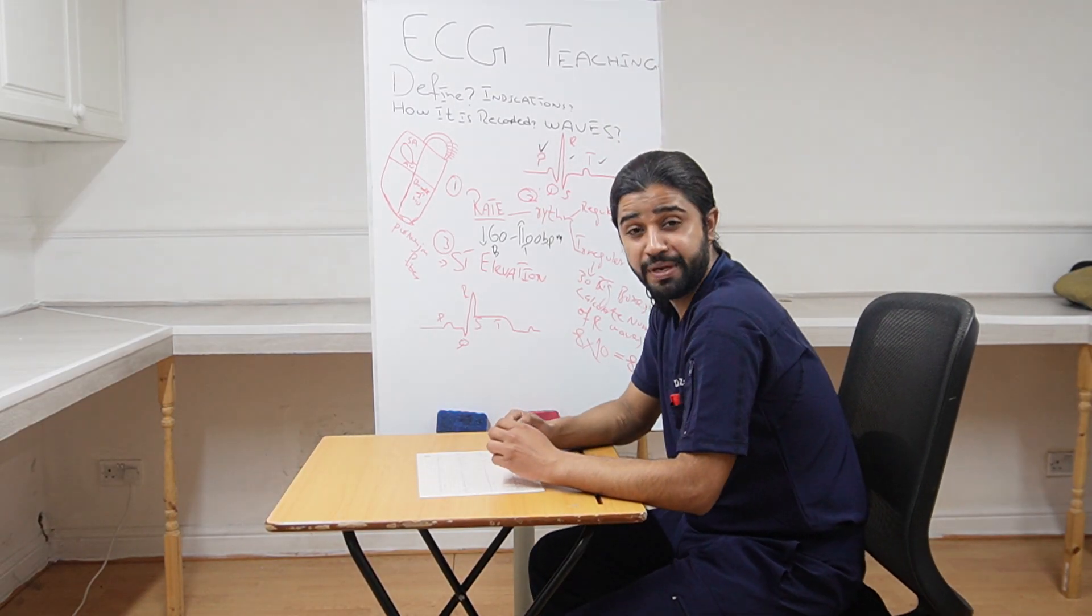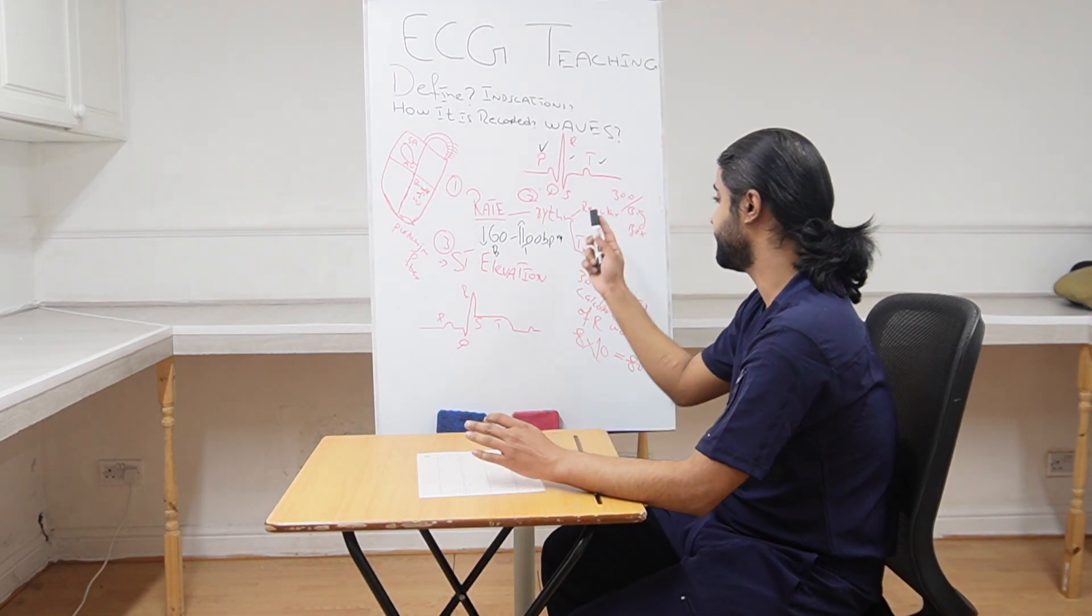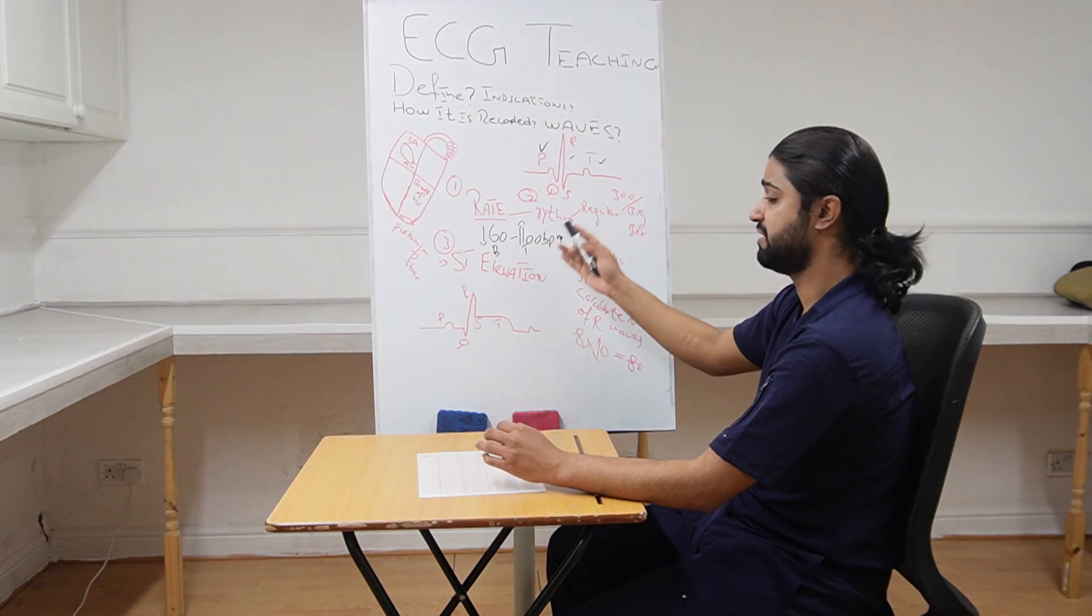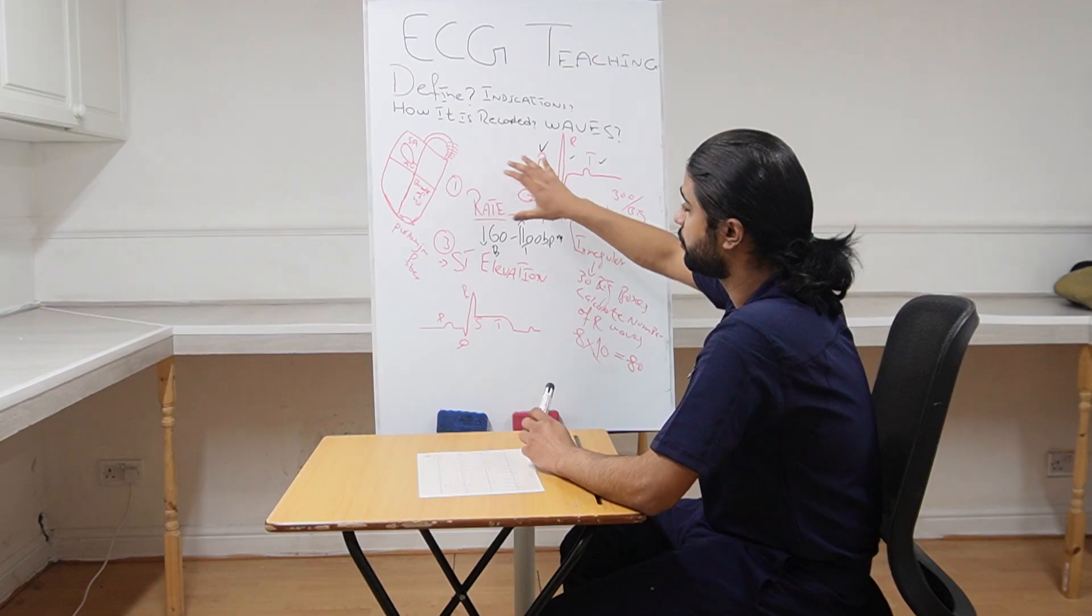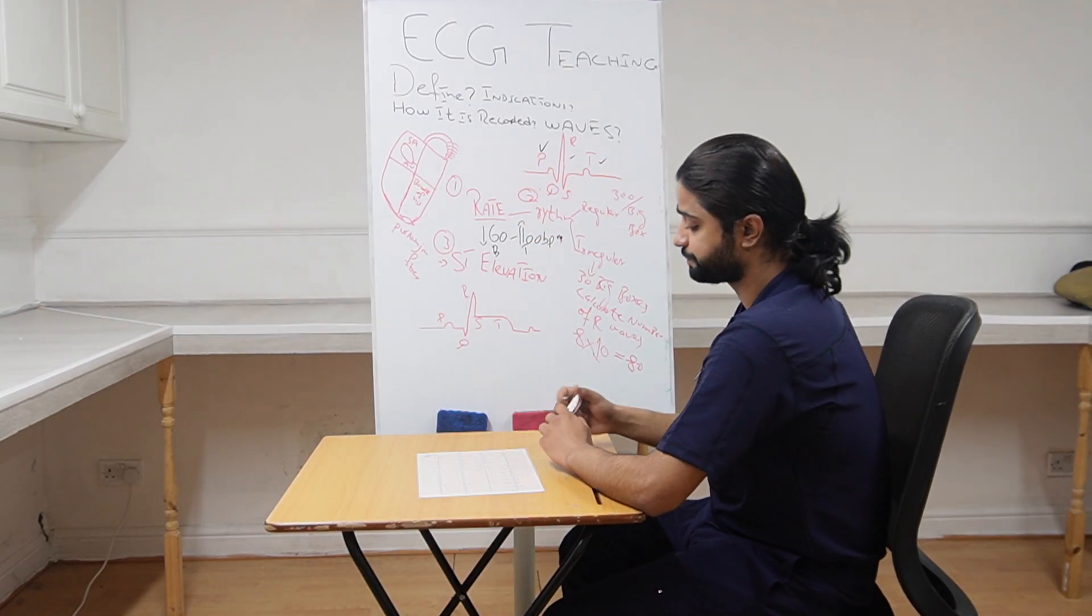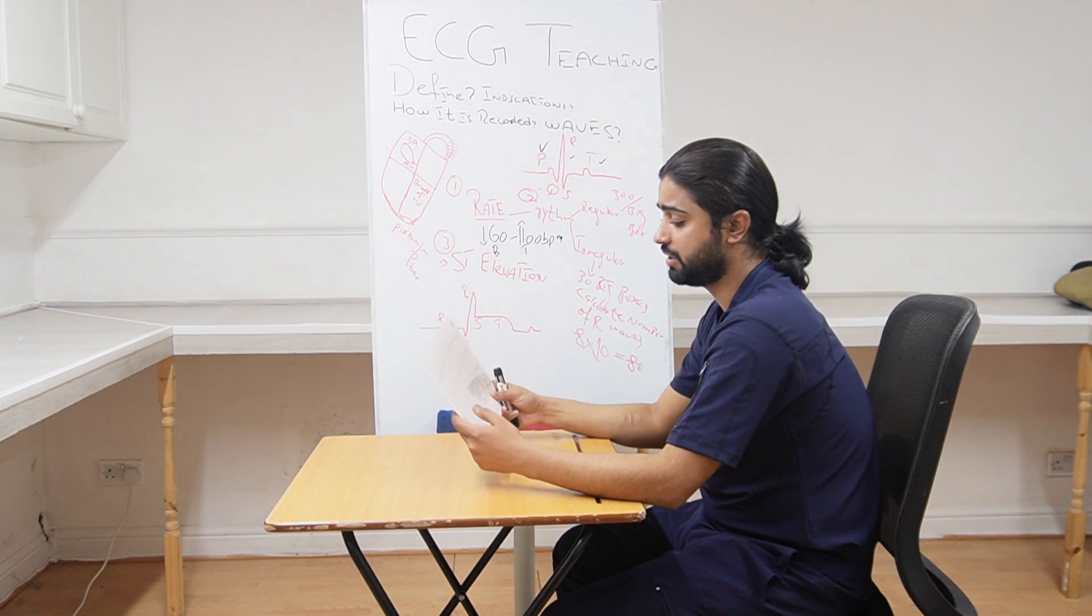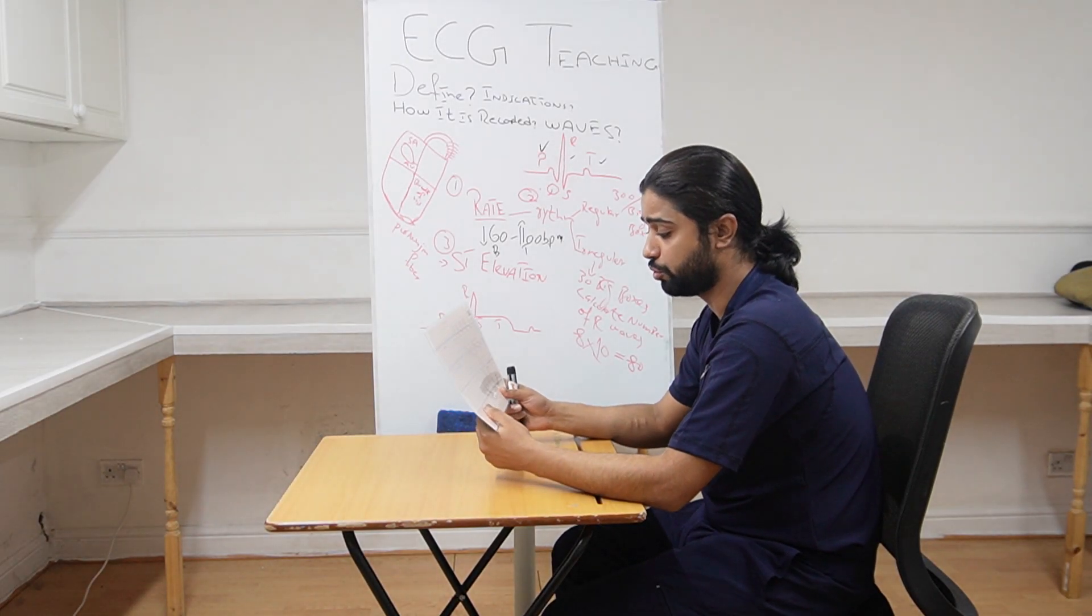Now I am going to explain how to find the rhythm, the rate and the ST elevation in ECG. So doctors, how to find the rhythm first? So you will find the rhythm on the longest lead, that is lead two.